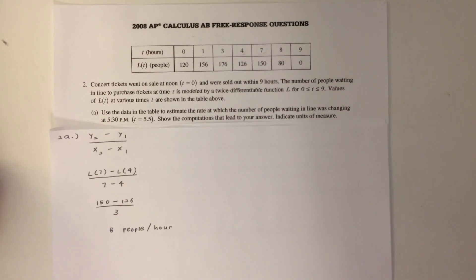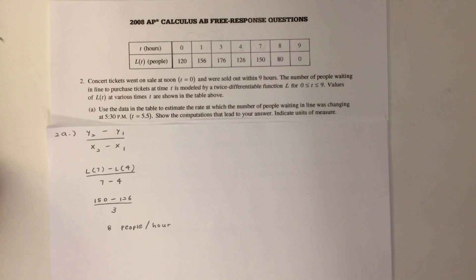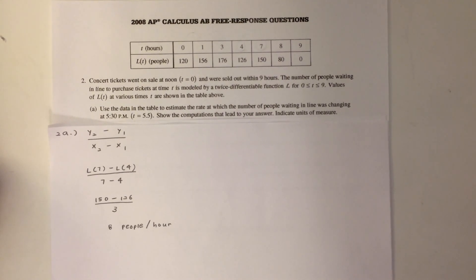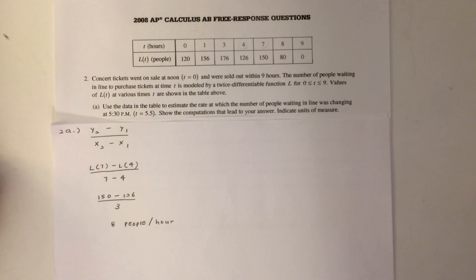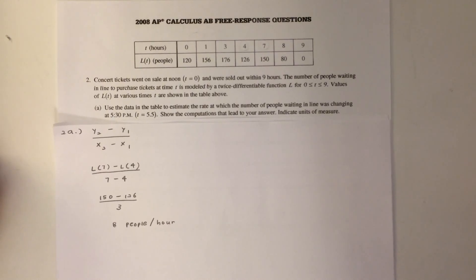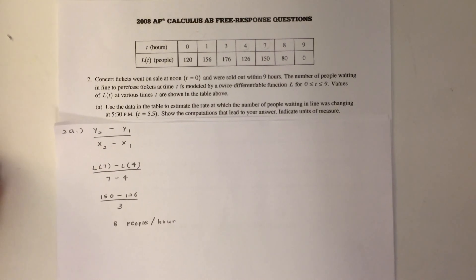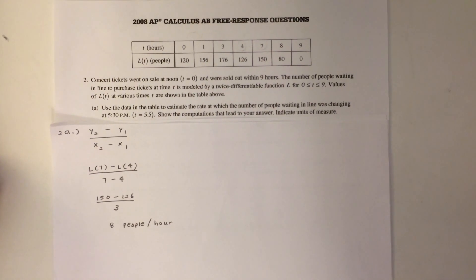In order to find the rate, we must look at the slope. However, if we look at the given table above, we see that there is no data given at 5.5 hours. Therefore, we must approximate the rate using the times that are closest to 5.5 hours,